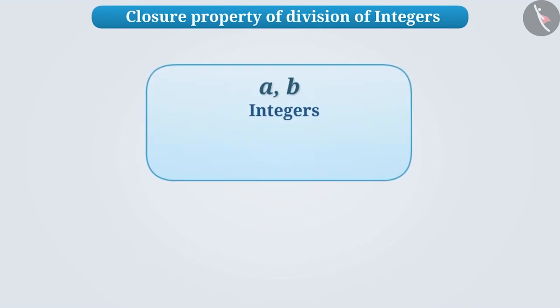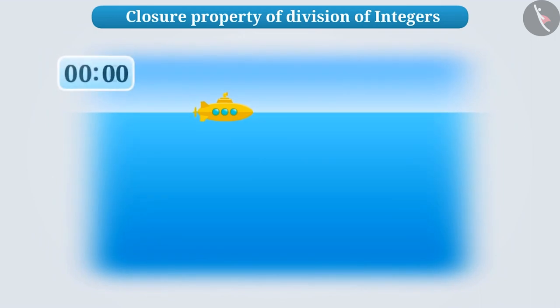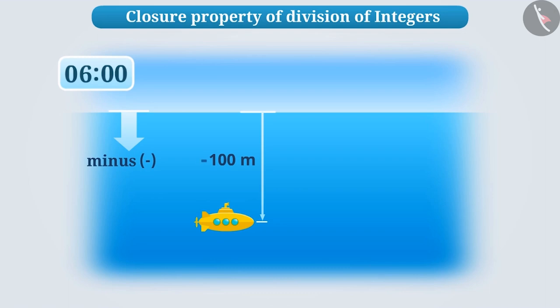Now, let us check if integers are closed under division too. Suppose a submarine goes 100 meters below sea level in six minutes. If we express the distance measured in the downward direction with a minus sign, then after six minutes, the position of submarine will be represented as minus 100.